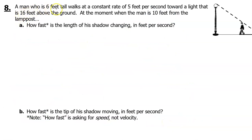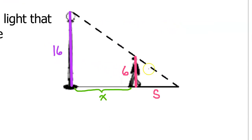Number 8. A man who is 6 feet tall walks at a constant rate of 5 feet per second towards a light that is 16 feet above the ground. At the moment when the man is 10 feet from the lamppost, how fast is the length of his shadow changing in feet per second? Let's label the diagram with numbers and variables so we can set up an equation later. We were told that the man is 6 feet tall and that the light is 16 feet off the ground. We are going to need a variable for the length of his shadow, so let's go ahead and call that S. And we will need a variable for the distance between the man and the lamppost which we will call x.